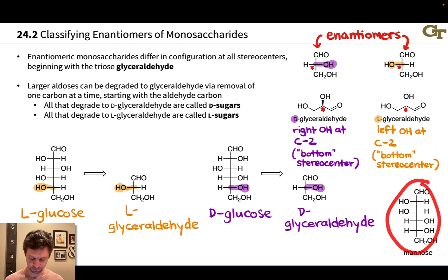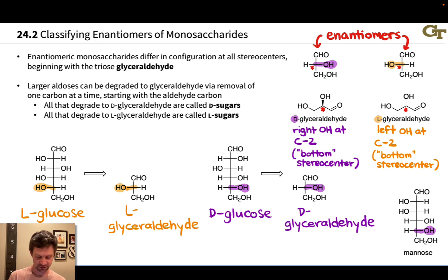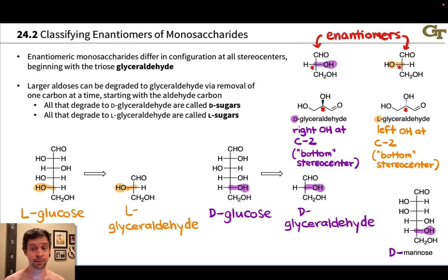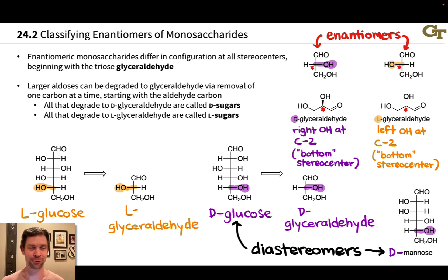Diastereomeric sugars have entirely different names. For example, looking at mannose here — this particular mannose is a D sugar. We look at that bottom-most stereocenter, the one that would remain in glyceraldehyde after degradation down to a triose, and that hydroxyl group points to the right, so this is D-mannose. But D-mannose is a diastereomer of D-glucose. They're both hexose sugars with the same chemical formula, but they are not mirror images because they don't differ at all configurations — at carbon 3, for instance, they have the same configuration. They differ only at some configurations, making them diastereomers. Generally, diastereomeric sugars have entirely different names because they have very different properties due to the different spatial orientations of the hydroxyl groups, and so they were given unique names a long time ago when sugars were first being studied.